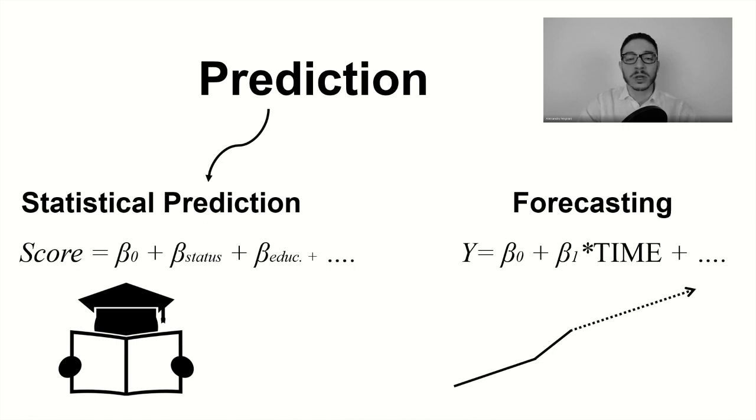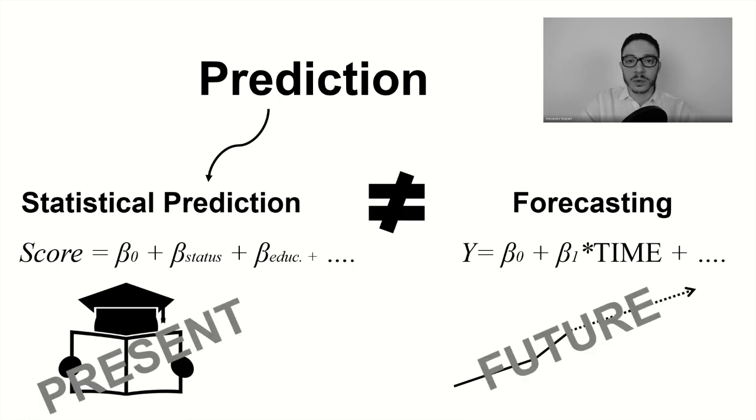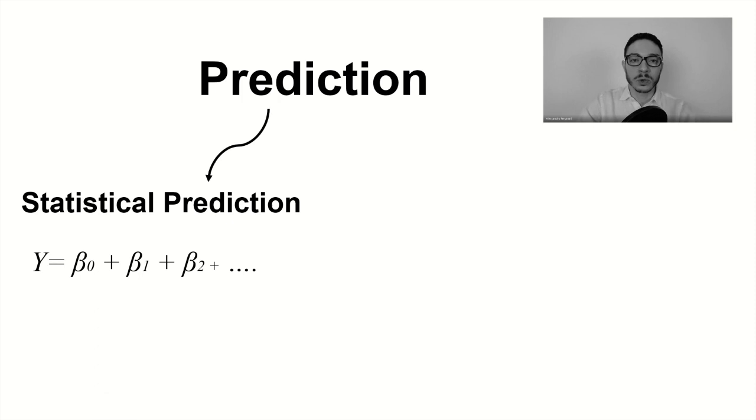It's something that actually refers to the present. It's something you could do this afternoon, not necessarily years or months ahead in the future. So that's the difference between forecasting and statistical prediction.